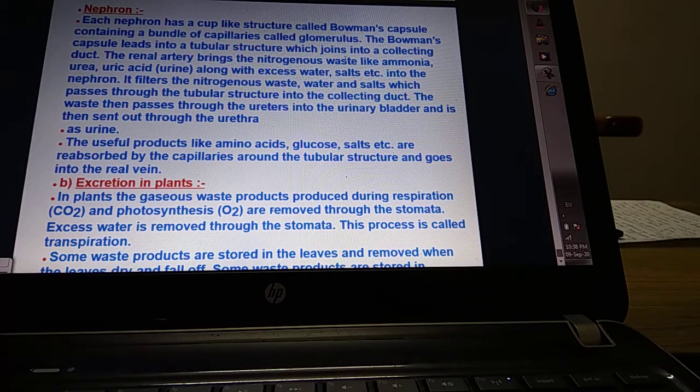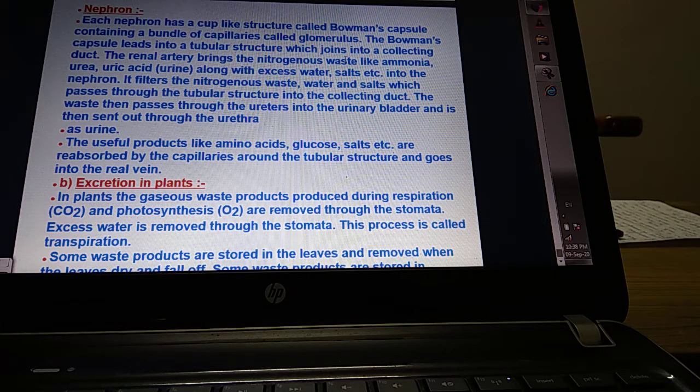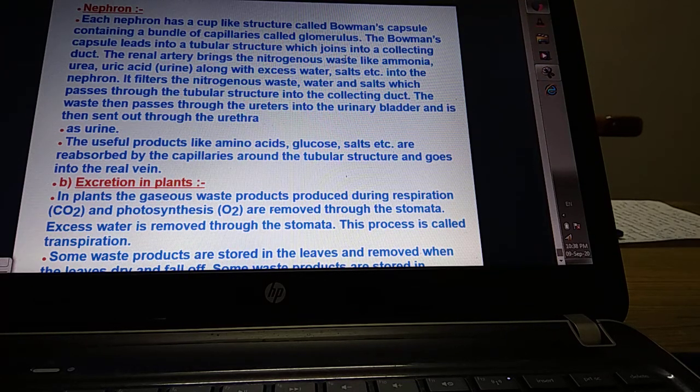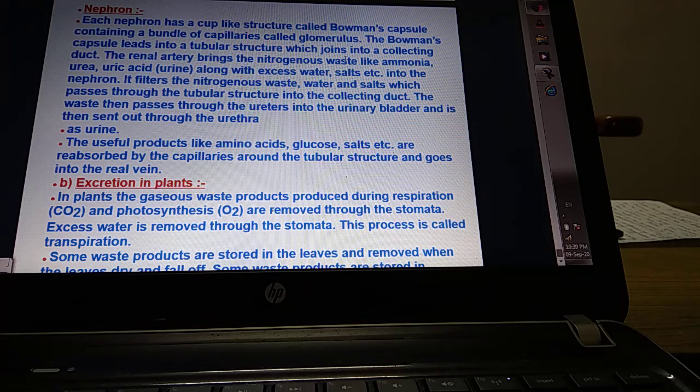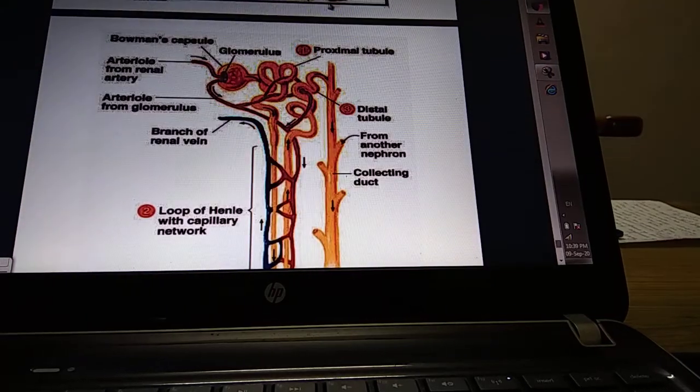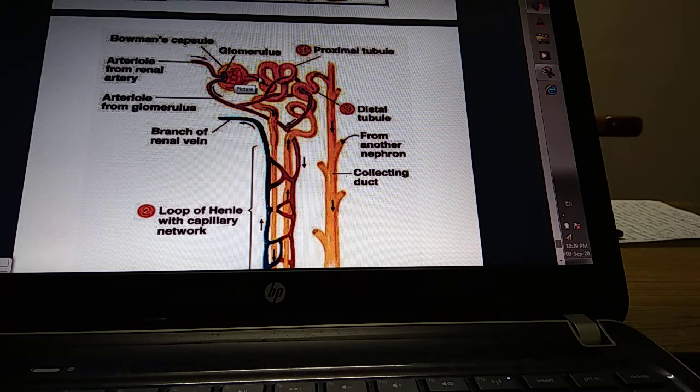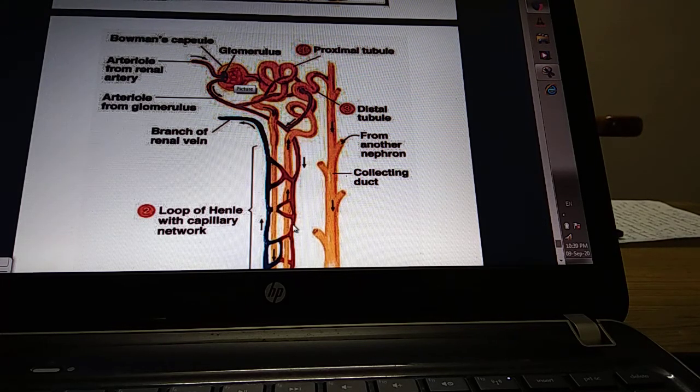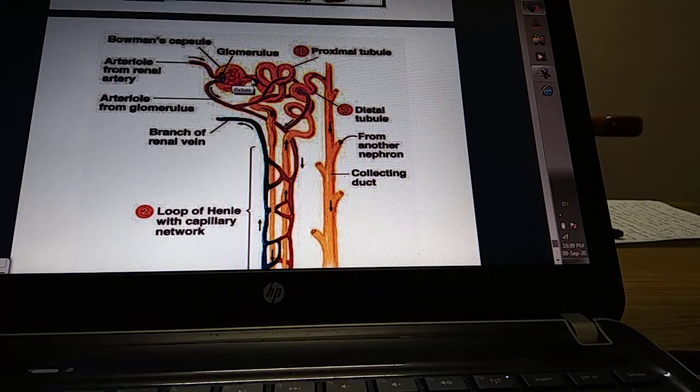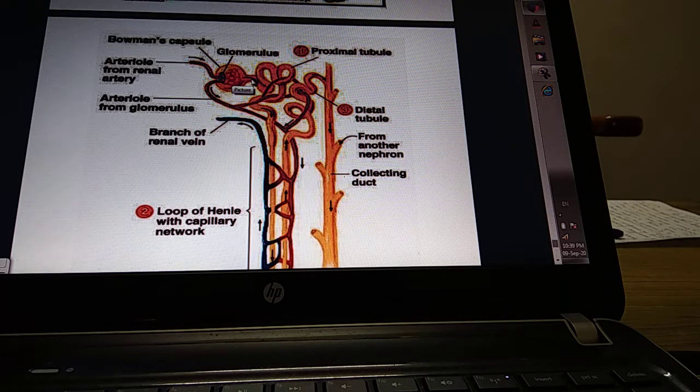Three basic processes are involved in urine formation. First is filtration. The renal artery brings nitrogenous wastes like ammonia, urea, uric acid along with excess water and salts into the nephron. The nephron filters the nitrogenous waste through glomerular filtration. Here the filtrate moves into the lumen of the tubule, the proximal convoluted tubule, and then the loop of Henle. In the first step, glomerular filtration, the filtrate contains waste as well as many useful substances.